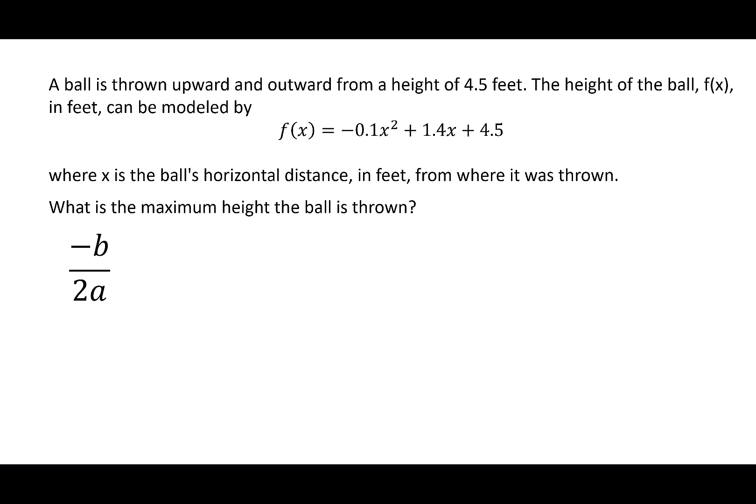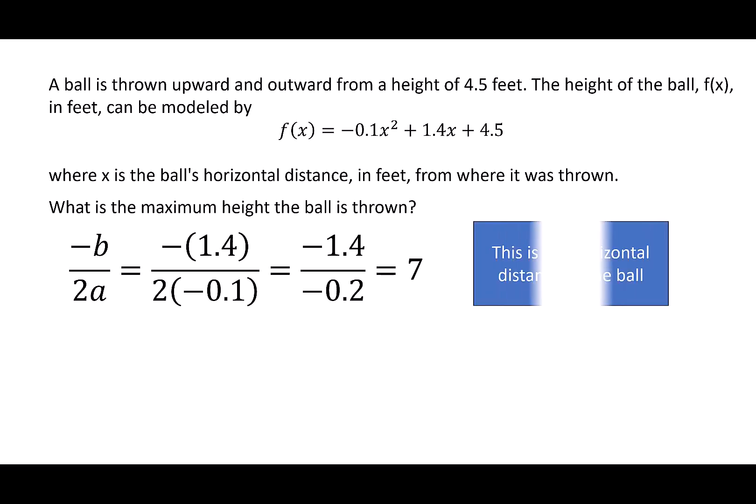This time, I have -1.4/(2 × -0.1). This is -1.4/-0.2, which gives me 7. 7 is the horizontal distance of the ball. To find the vertical distance, I calculate f(7). -0.1(7)² + 1.4(7) + 4.5 gives me 9.4 feet.